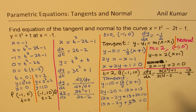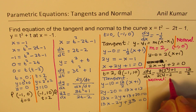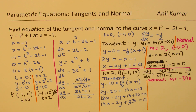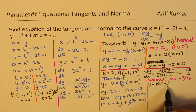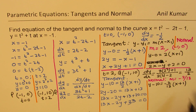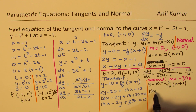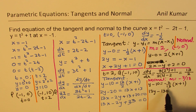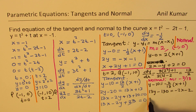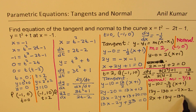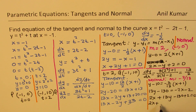Now let's find the equation of the normal at Q. The slope is the negative reciprocal: minus 2 over 13. The equation is y minus 10 equals minus 2 over 13 times (x plus 1). Cross multiplying: 13y minus 130 equals minus 2x minus 2. Rearranging: 2x plus 13y minus 128 equals 0.